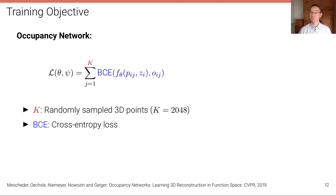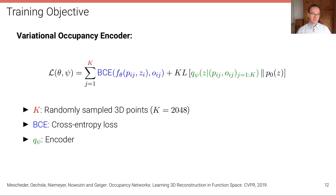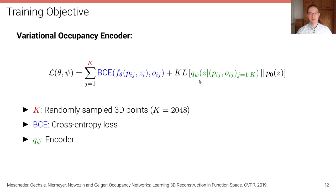Training is a simple classification task using standard binary cross-entropy loss. For all K points, we compute the binary cross-entropy between the model prediction and the true occupancy (0 or 1), conditioned on the input image encoding Z. We can also build a variational occupancy autoencoder by adding a KL divergence term between a prior and an encoder distribution Q_psi, requiring an additional encoder from point sets to the latent code.